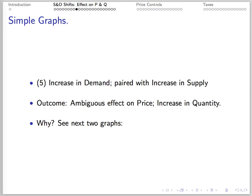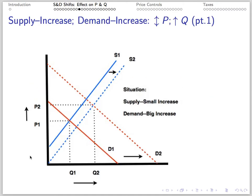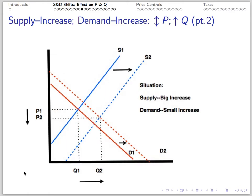Number 5: If there's an increase in demand paired with an increase in supply, we get an ambiguous effect on price — it might either rise or fall — and we get an increase in quantity. The first picture demonstrates a big increase in demand and a small increase in supply: quantity rises, price rises. The second picture demonstrates a small increase in demand and a big increase in supply: quantity rises, price falls.